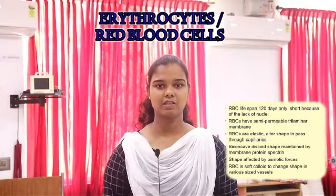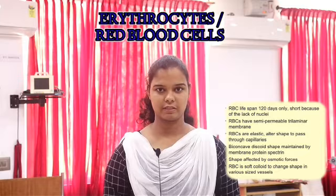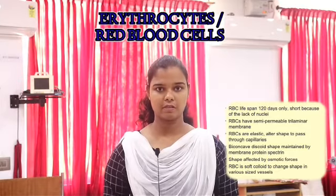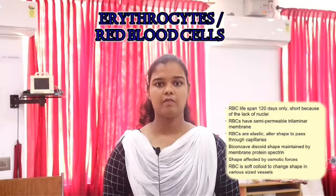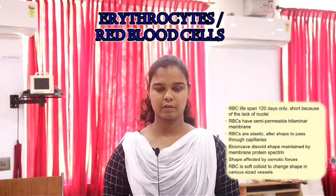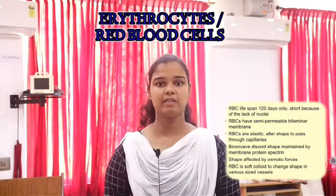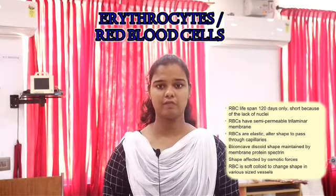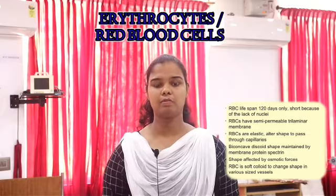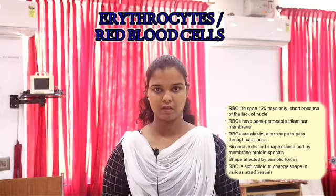RBCs are larger in number when compared to other blood cells. Normal value of RBC is 4 to 5.5 million per cubic millimeter. In an adult male it is 5.5 million per cubic millimeter and in females it is 4.5 million per cubic millimeter.